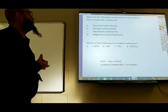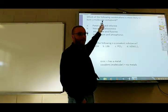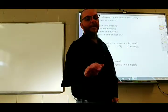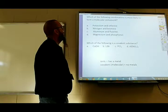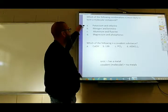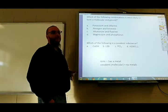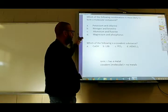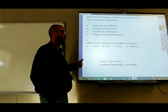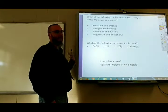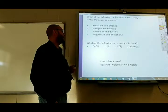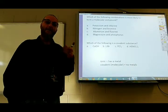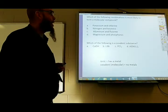Which combinations would form a molecular compound? Molecular compound means you're dealing with a covalent substance and covalent bonding. For covalent bonding, you have to have two nonmetals. So we look through the options for the one with two nonmetals — that's nitrogen and bromine. Molecular compound means covalent bonding; covalent bonding means two nonmetals. Which of the following is a covalent substance? Same idea — you're looking for the one that's two nonmetals, which would be C. If it asked for an ionic substance, you'd be looking for a metal, since metals do ionic bonding.